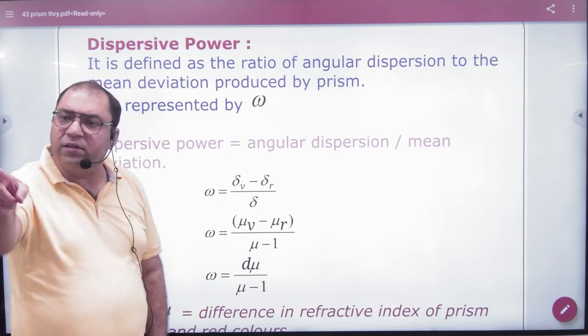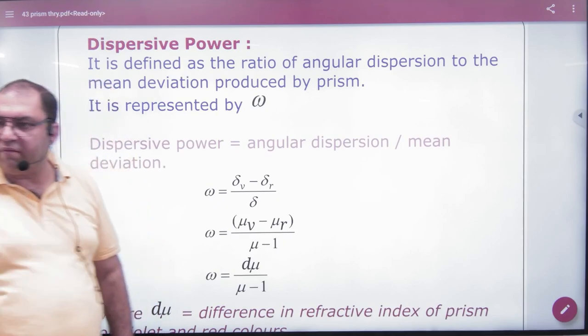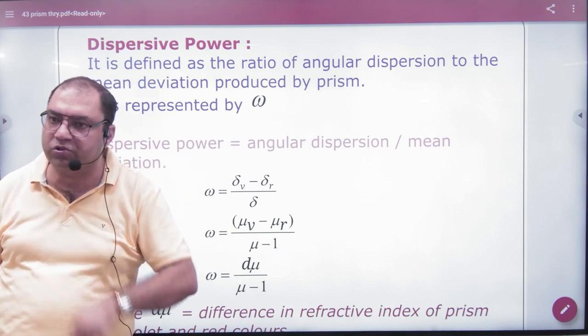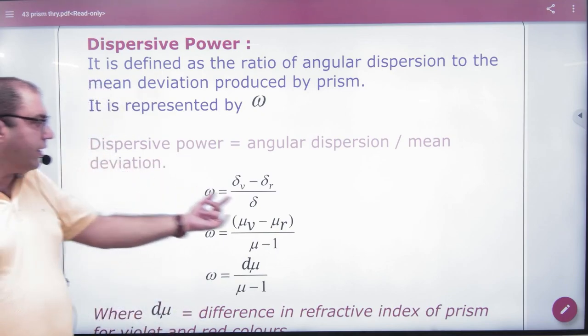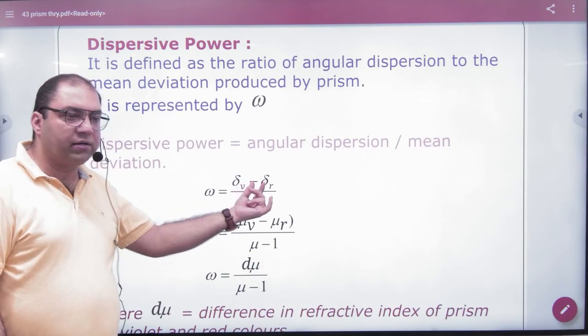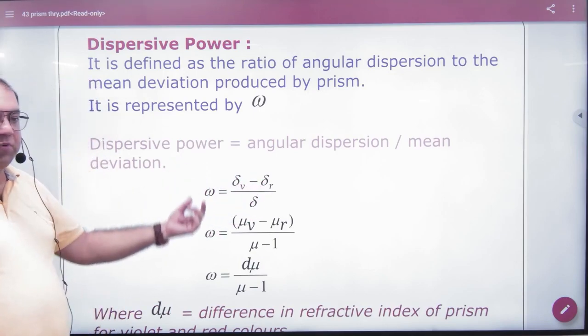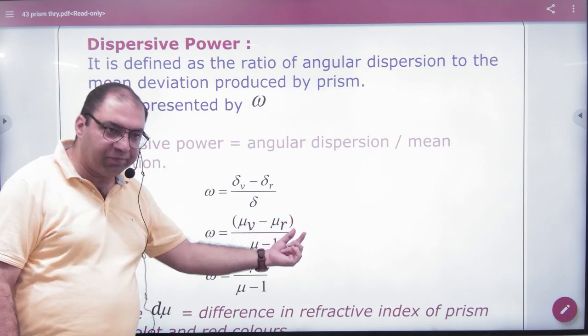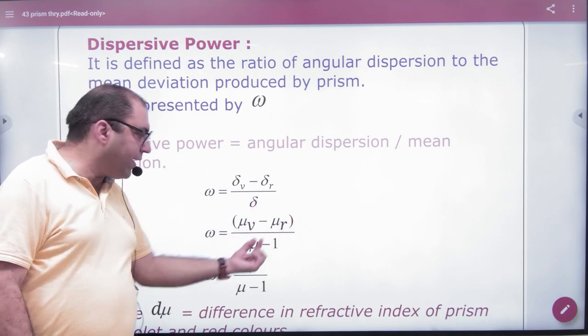This was also last time we discussed this for the lens, which formula I remember d mu by mu minus 1. So this term came now. Violet and red color difference, angular dispersion we have already removed: mu violet minus mu red into a. And for mean color, mu minus 1 into a.